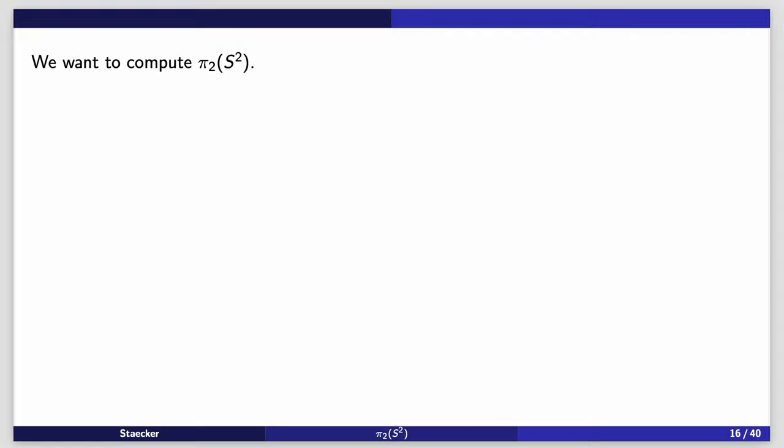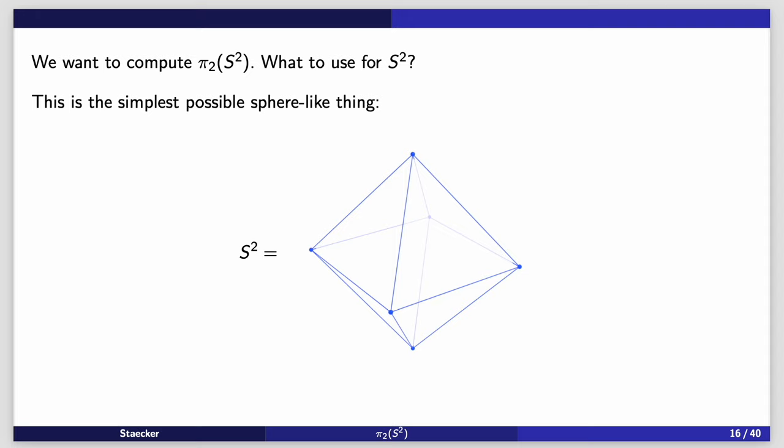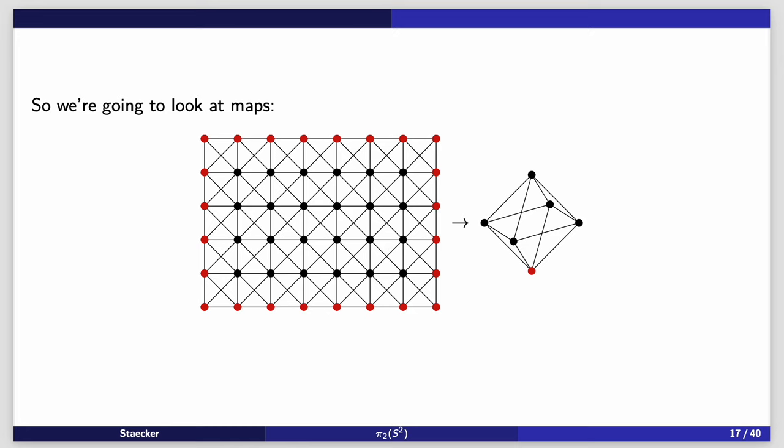The group that we're talking about, this π₂, is the set of all maps from the rectangle of m by n dimensions where the boundary maps to the base point, modulo the relation of what we call extension homotopy. This means you can do that extension where you just make the box bigger. And you can also do homotopies, that is the categorical homotopy. The group operation here is what you think it ought to be. If I have two things here which map the boundaries to the base point, we're going to add them together in this way. You just stack them diagonally like that. And I want to compute π₂ of S² in only 10 minutes. The last question before we can actually get started is what exactly do we mean by S²? What are we going to use for our two sphere? This is the simplest possible sphere-like thing.